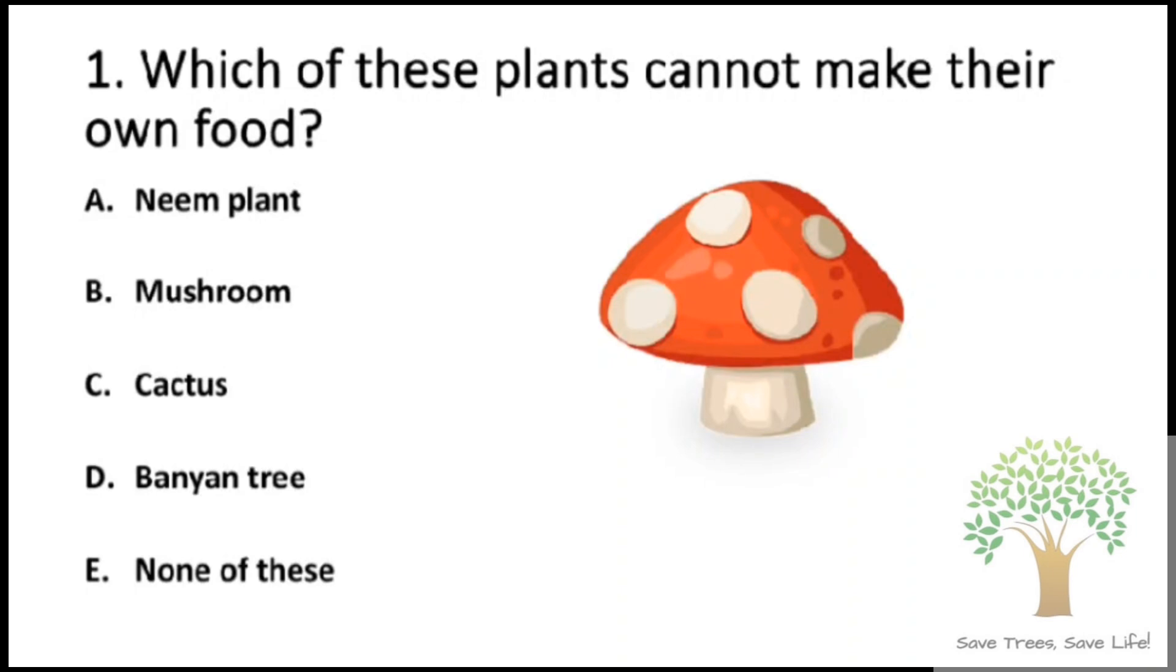Question number 1: Which of these plants cannot make their own food? A. Neem plant, B. Mushroom, C. Cactus, D. Banyan tree, E. None of these. So the answer is option B, Mushroom.